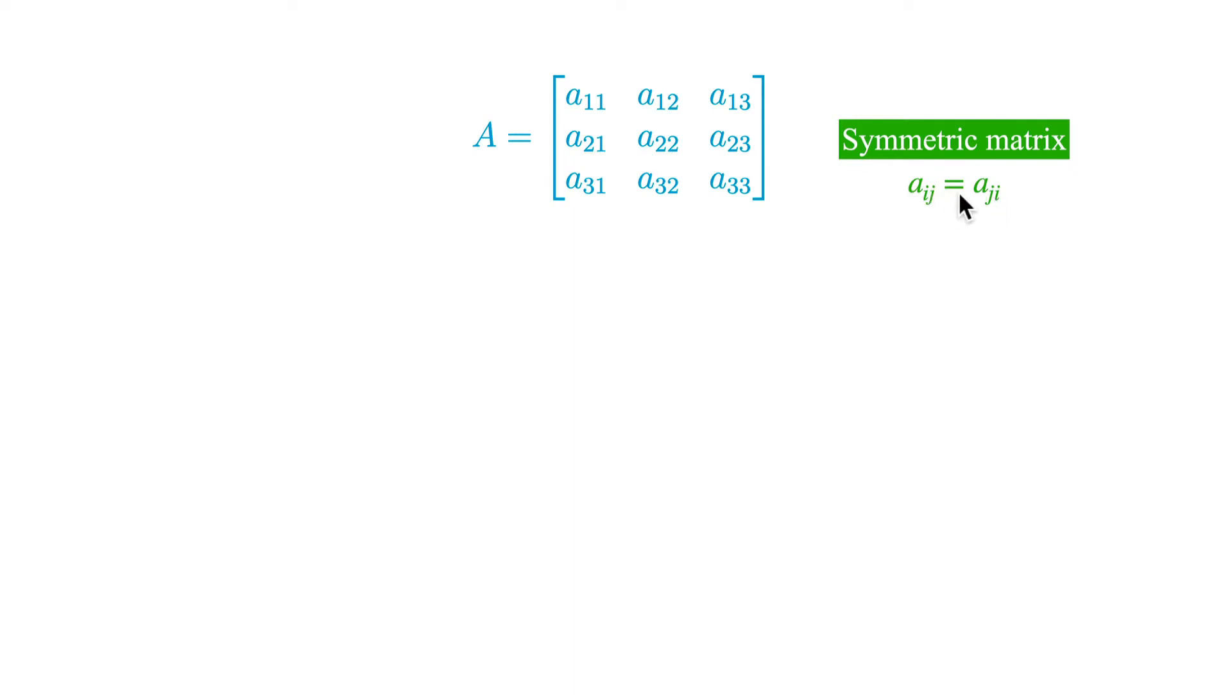The matrix will be now a 3 by 3 matrix, and the requirement is that this matrix is symmetric. This means that these two elements are equal to each other. This can be briefly written as a_ij equals a_ji. You see, here is 1,3 and here is 3,1. These two elements are equal to each other.